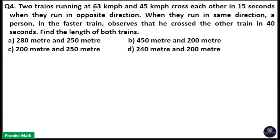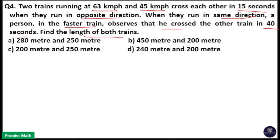Two trains running at 63 kilometers per hour and 45 kilometers per hour cross each other in 15 seconds when they run in opposite directions. When they run in the same direction, a person in the faster train observes that he crossed the other train in 40 seconds. Find the length of both trains.